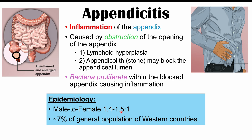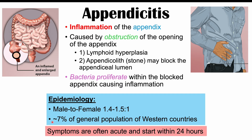Who's more likely to get appendicitis? We actually see it slightly more common in males compared to females — males outnumber females 1.4 to 1.5 to 1. In Western countries, we can see a higher prevalence of appendicitis, generally up to 7% of the general population at some point in their life. In Asia and Africa, due to differences in diet, they can have lower prevalences. The symptoms are often going to be acute and start within 24 hours.